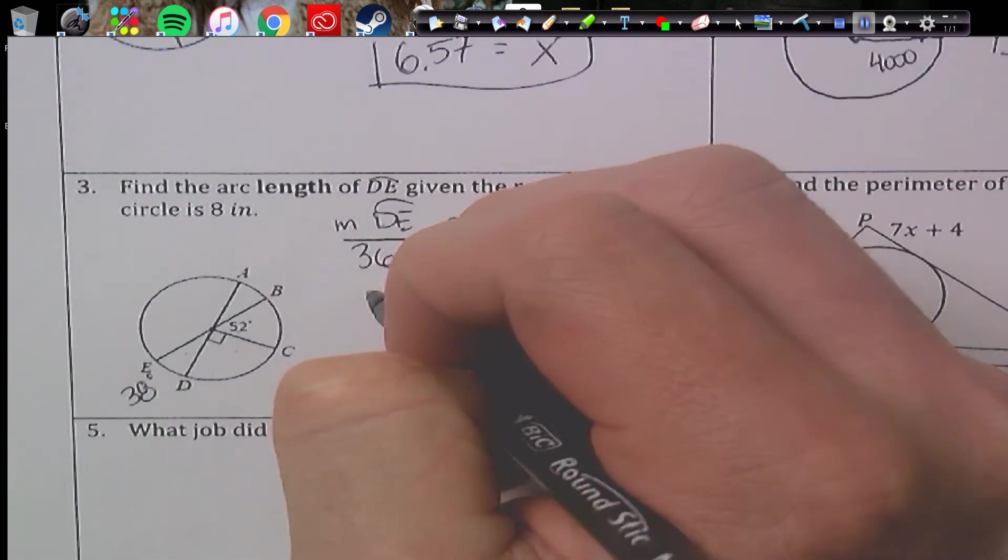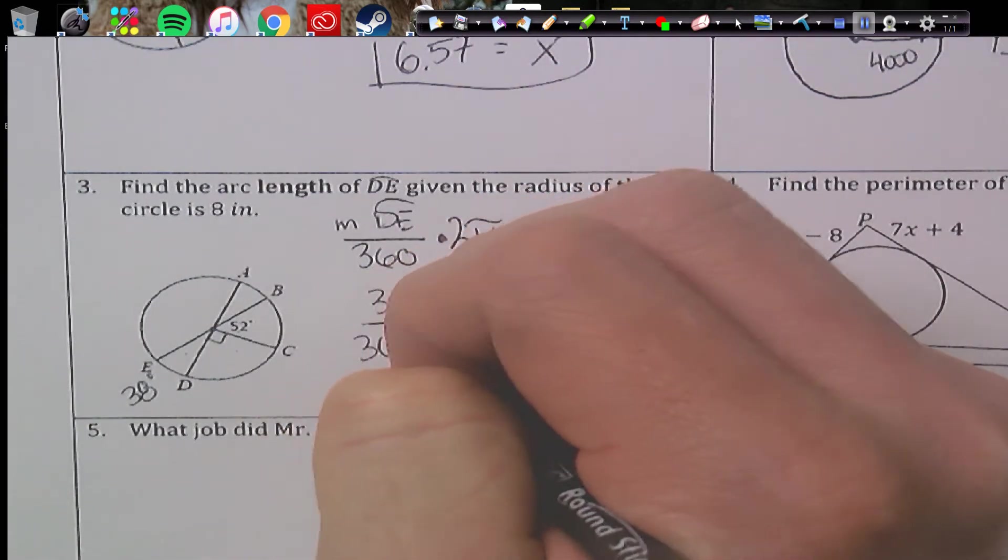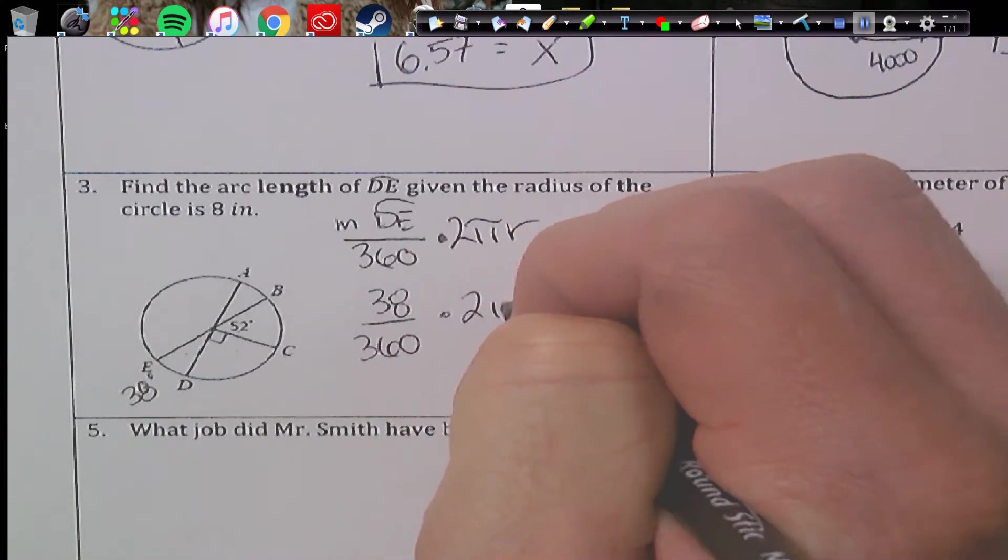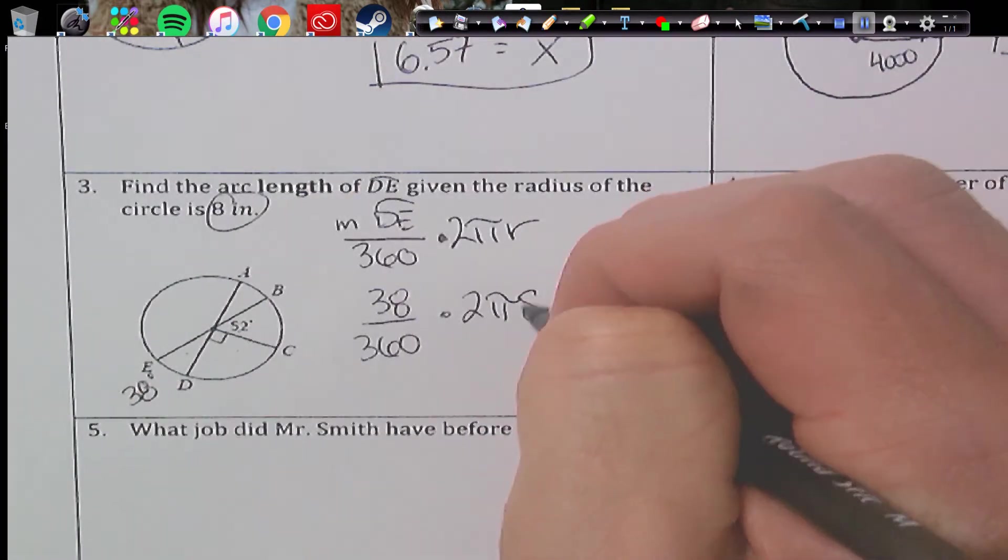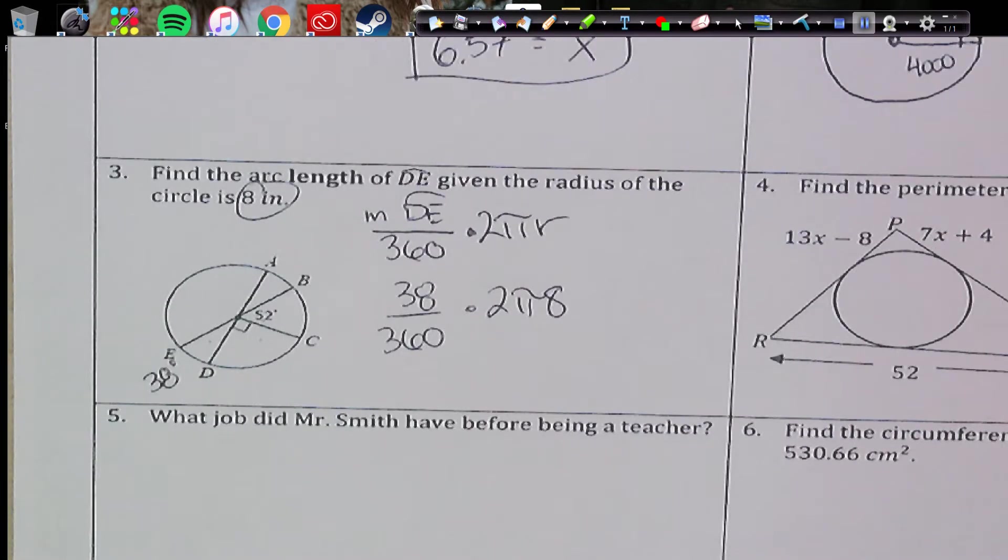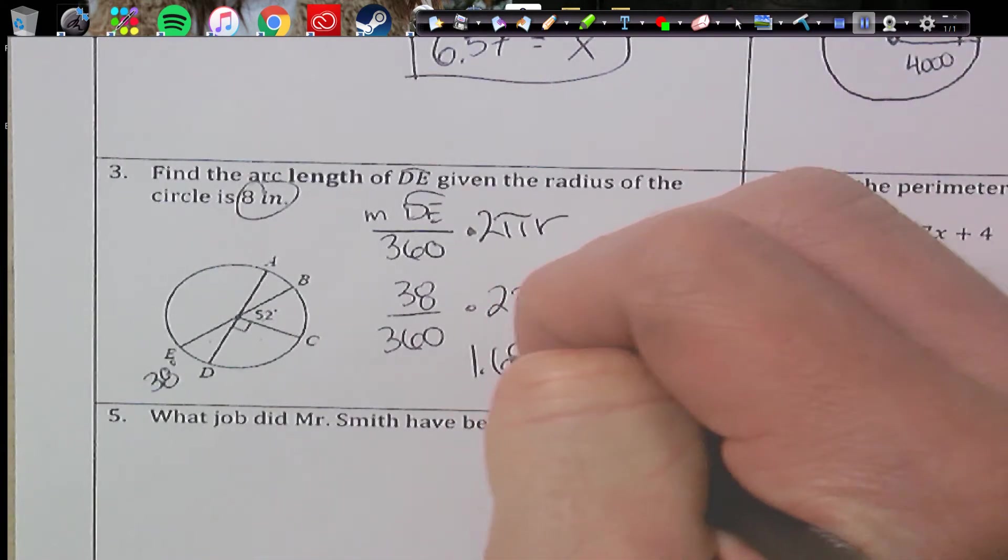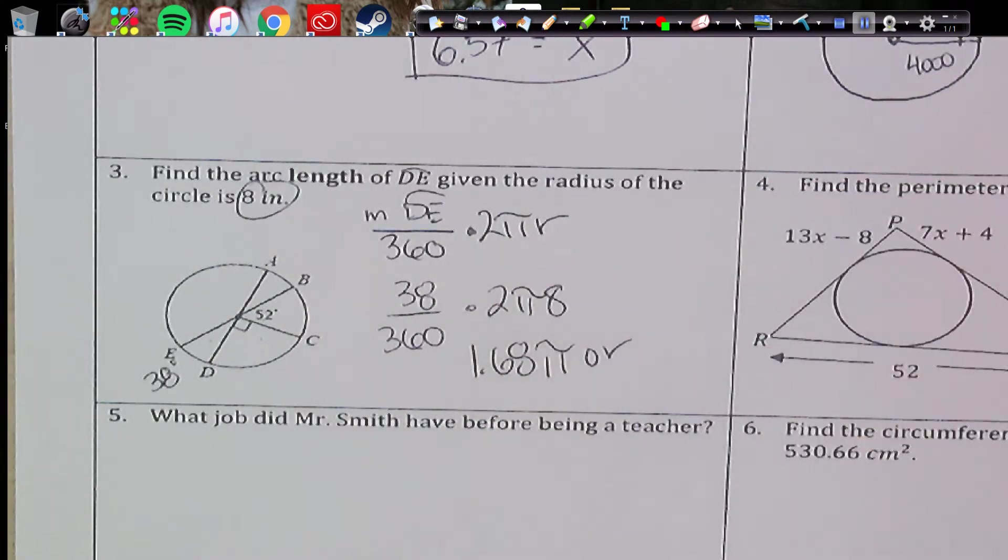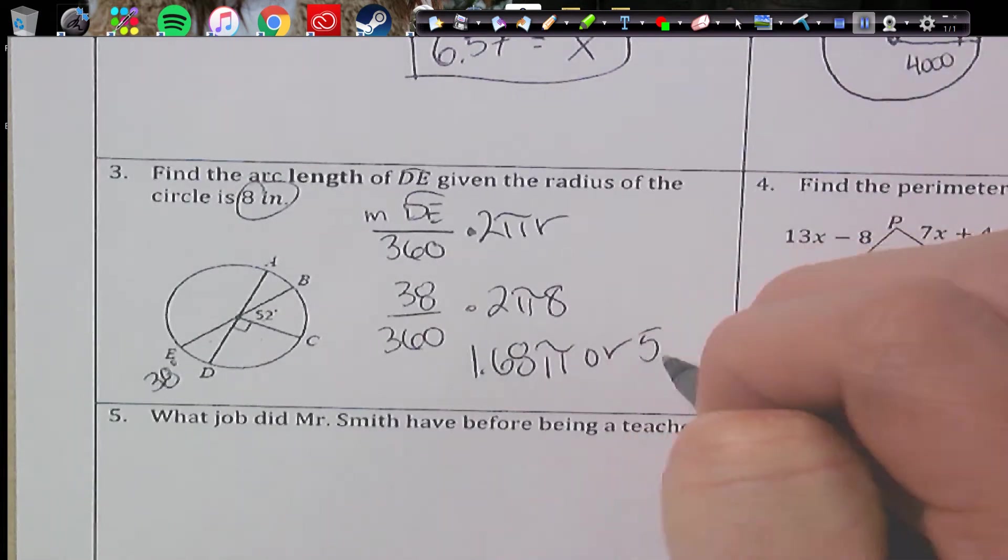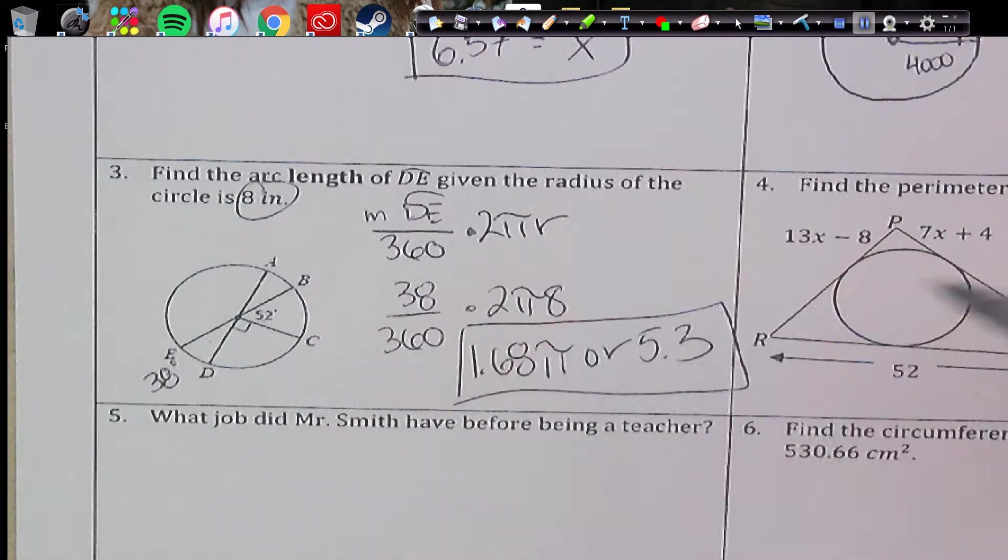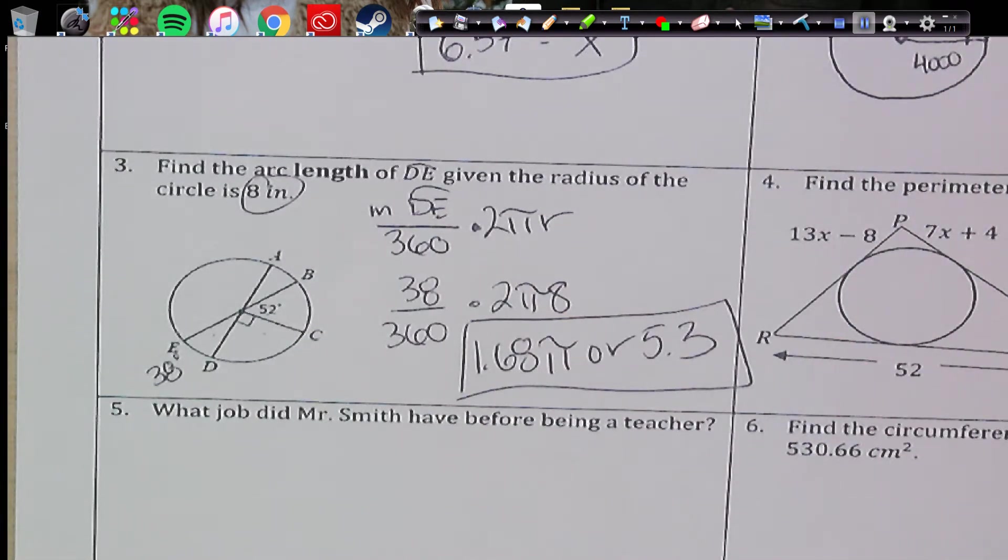So the measure is 38, 38 over 360 times 2π, well, 8 is my radius. And so we can get two different answers. So 38 divided by 360 times 16, so you might get about 1.68π. Or if you times it by π, then you're going to get 5.3 about. So either one of those two would be good, and we're in inches for that one.